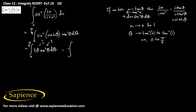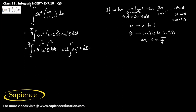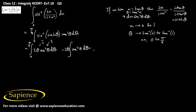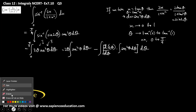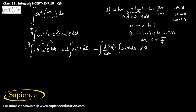So it will be 2θ · ∫sec²θ dθ minus ∫[d/dθ(2θ) · ∫sec²θ dθ] dθ, with limits from 0 to π/4.